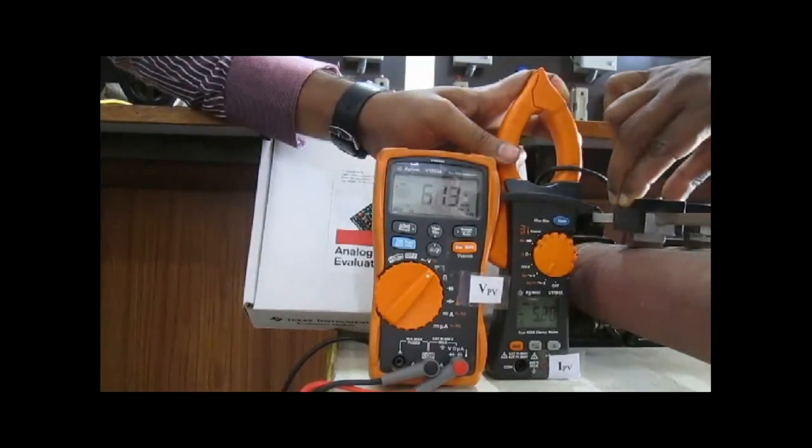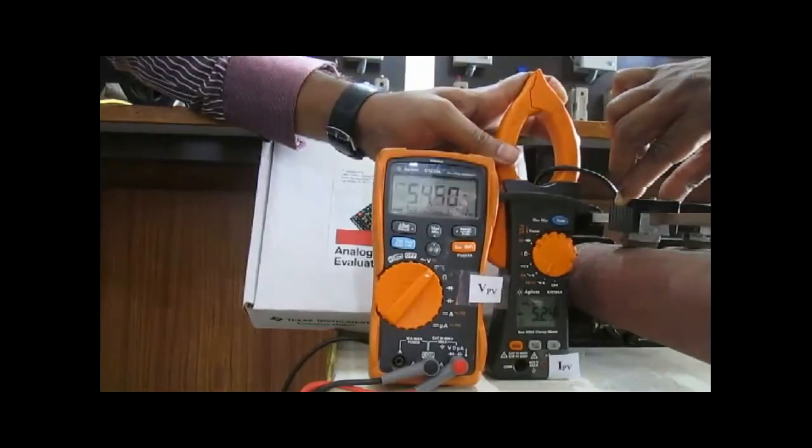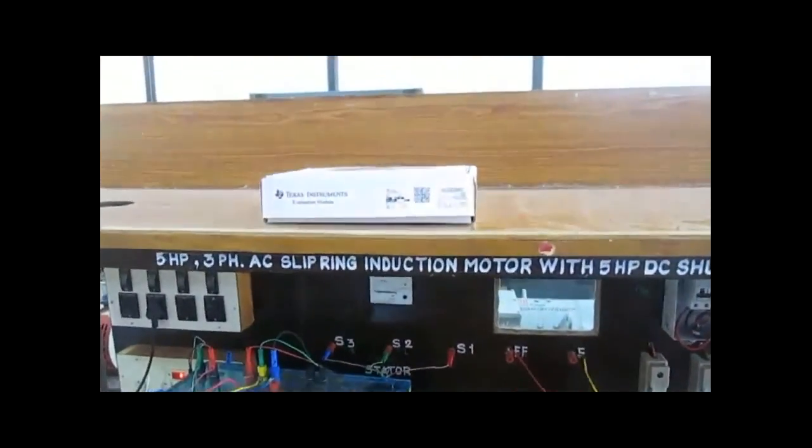Now the rheostat is almost short-circuited. You can see the short circuit current is something around 5A and the voltage has come down to less than 50V.